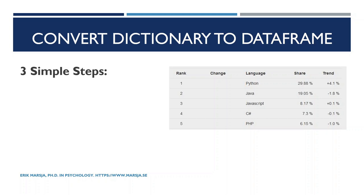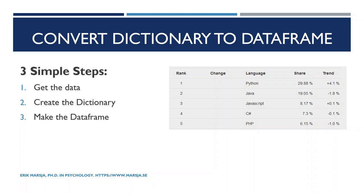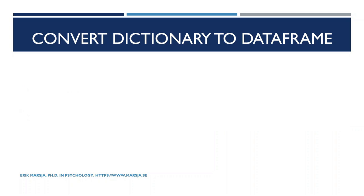The steps are as follows. First we will learn how to get the data. Second we'll take this data and create a Python dictionary. Third we will take this Python dictionary and convert it to a pandas data frame. After learning those three steps, we will learn how to make a pandas data frame from an ordered dictionary.